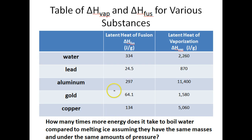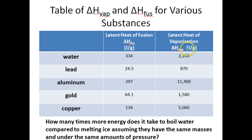Looking at this question: how many times more energy does it take to boil water compared to melting ice, assuming the same masses and pressure? The heat of fusion for water — the energy to melt ice into water — is 334 joules. The heat of vaporization — the energy to turn water into water vapor — is 2,260 joules. Comparing these two, it takes about seven times more energy to turn water into water vapor than to turn ice into water.